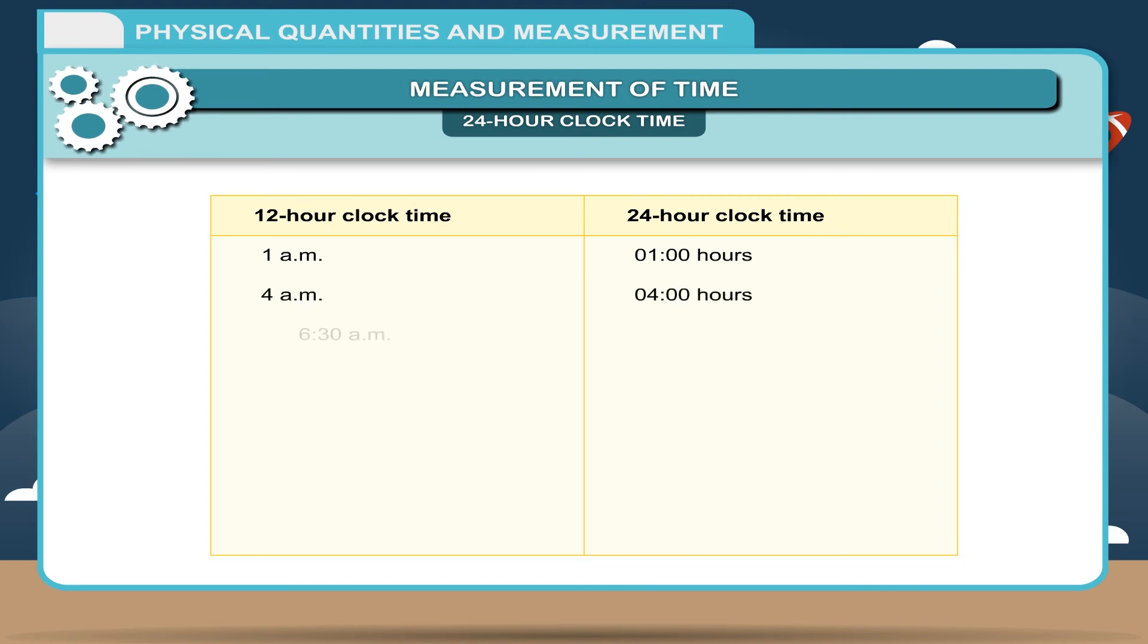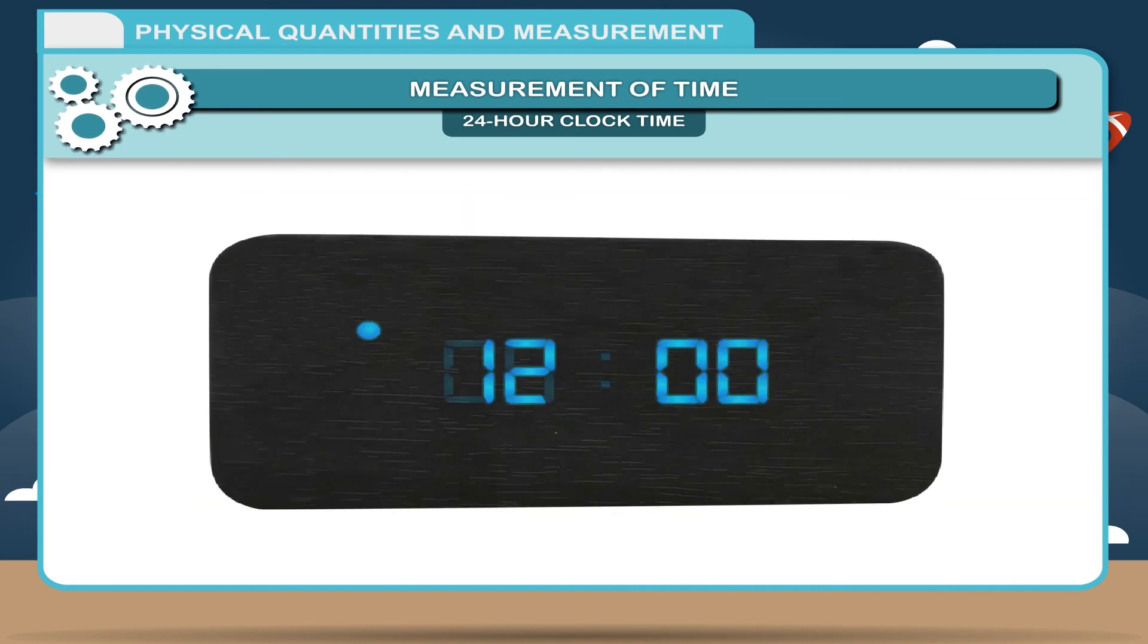12 midnight is 24 hours or 0 hour 0 minutes. In a 24 hour clock, time is shown by 4 digits. The first two digits indicate the number of hours and the next two digits indicate the number of minutes.